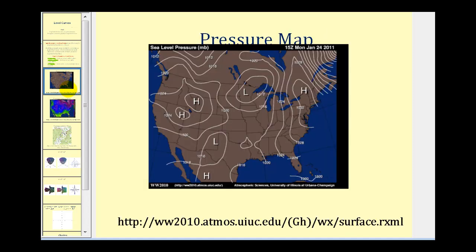Here's a pressure map. Each of these curves represents where the pressure would be the same. In this region here, we can see that as we move toward the center, the pressure gets higher. And over in this region, as we approach the center, the pressure gets lower.